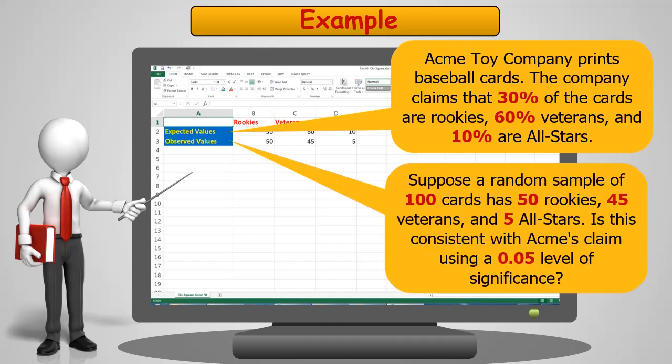We draw a random sample of 100 cards, and it has 50 rookies, 45 veterans, and 5 all-stars. Is this consistent with Acme's claim if I use a 0.05 significance level?